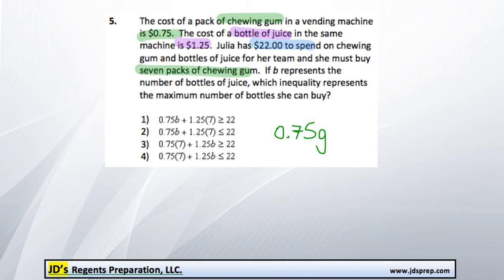So this represents the price of the gum. Now, to add in the price they're spending on juice, that's $1.25 per bottle of juice, or 1.25B. We also know that she has $22 to spend.